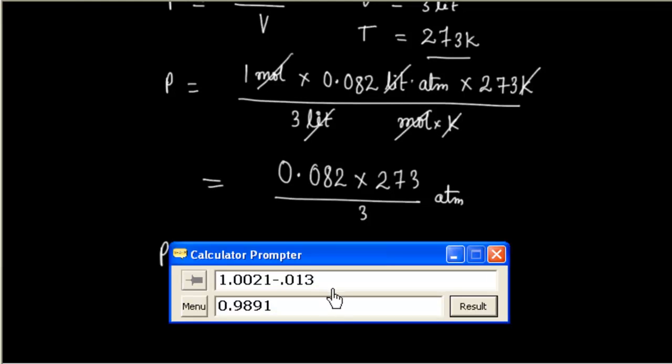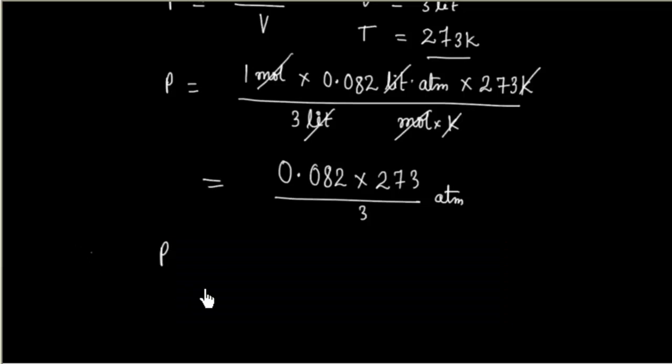We can calculate this value. This is 7.462 atmospheric pressure. This value I am getting if I use ideal gas equation.